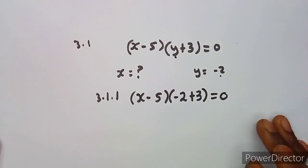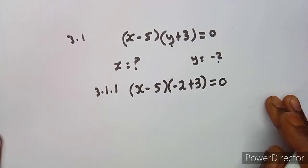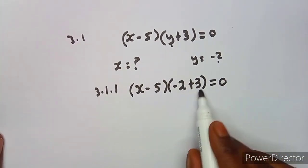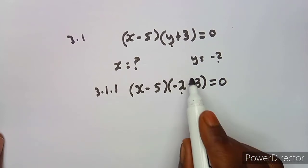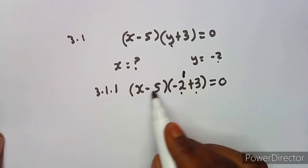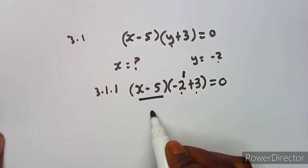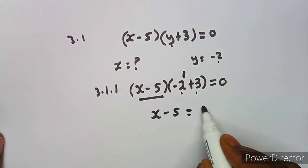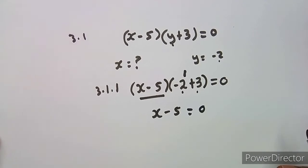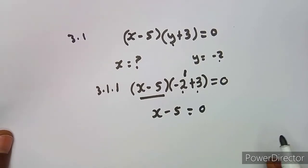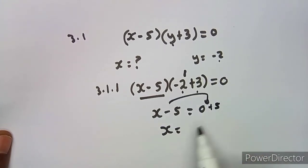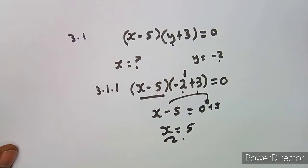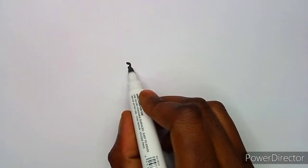We simplify the bracket: minus two plus three equals one. One times x minus five just remains as x minus five, since multiplying by one does not affect the value. So x minus five equals zero, which means x equals five. That is the concept for the first part.